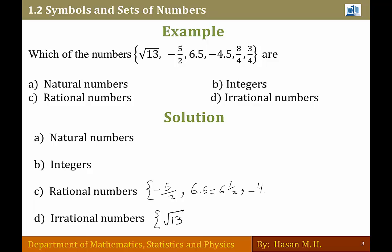Minus 4.5: it is a rational number because it equals minus 4 and a half, and minus 4 and a half is not an integer and it's not a natural number.